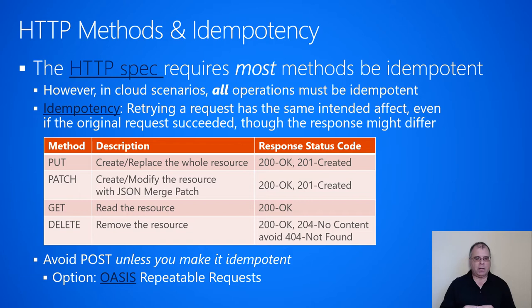The GET method retrieves or reads a resource from the service. It is just naturally idempotent — if you call GET twice, it would return the same value, unless the resource was changed in between. We usually return a 200 OK with the GET response.